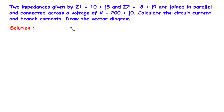If you find this video helpful, feel free to donate whatever amount you can — link is in the description below. Two impedances given by Z1 = 10 + j5 and Z2 = 8 + j9 are joined in parallel and connected across a voltage of V = 200 + j0. Calculate the circuit current and branch currents, and draw the vector diagram.